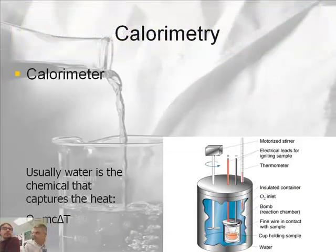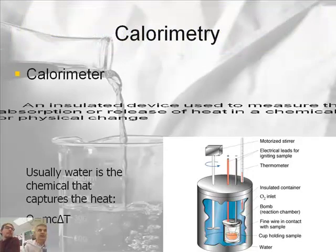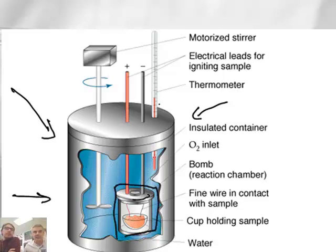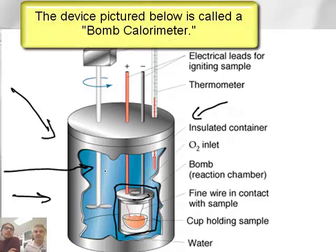A calorimeter is an insulated device that measures calories. It can measure the absorption or release of heat in a chemical or physical change. Our calorimeters are cheap styrofoam cups, but you can buy the $500 or $5,000 variety. The more expensive ones are very specific insulated containers with thermometers to measure the reaction.